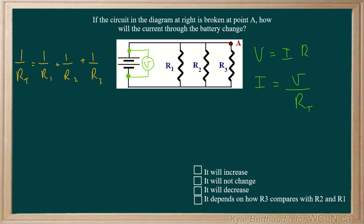So if we can determine the total resistance and how it changes when we cut the circuit at A, we can determine how that's going to affect this total resistance, and therefore how that will affect the current I.